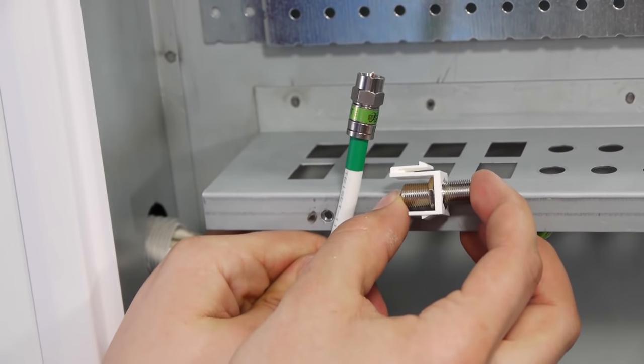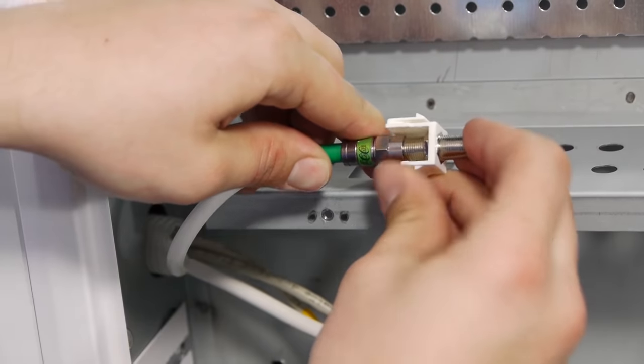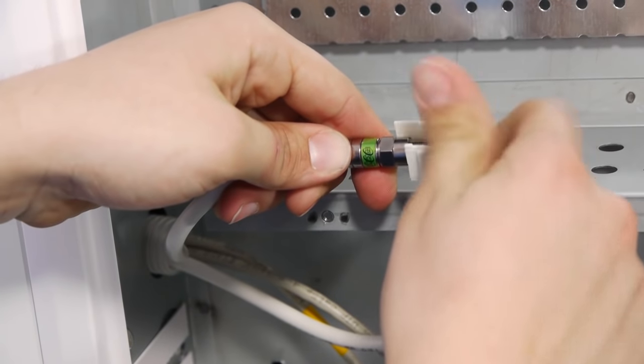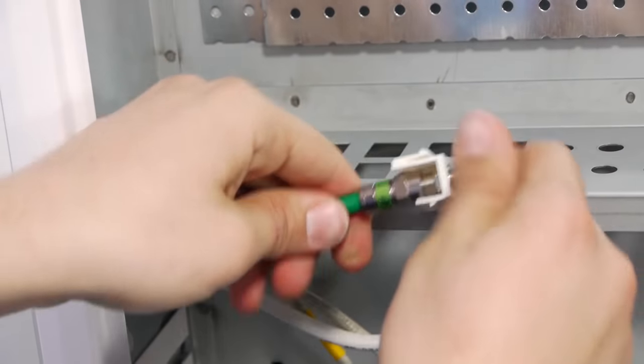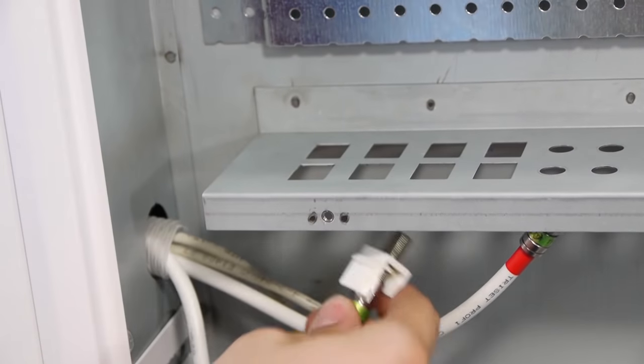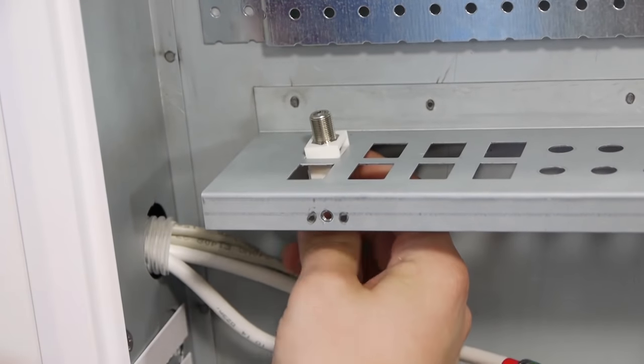The cables terminated with suitable connectors should be connected to the appropriate keystone modules that are snapped into ports of the mounting plate. It is important to keep at least the minimum bending radius of each type of cable.